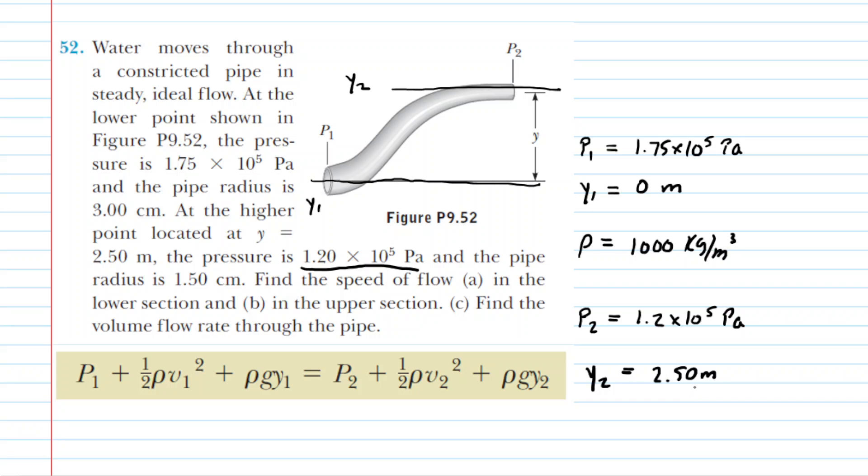With those data, we can go ahead and plug into Bernoulli's equation. It might also be worth noting that g, of course, is 9.8 meters per second squared. So we'll plug all of those known values into Bernoulli's equation.